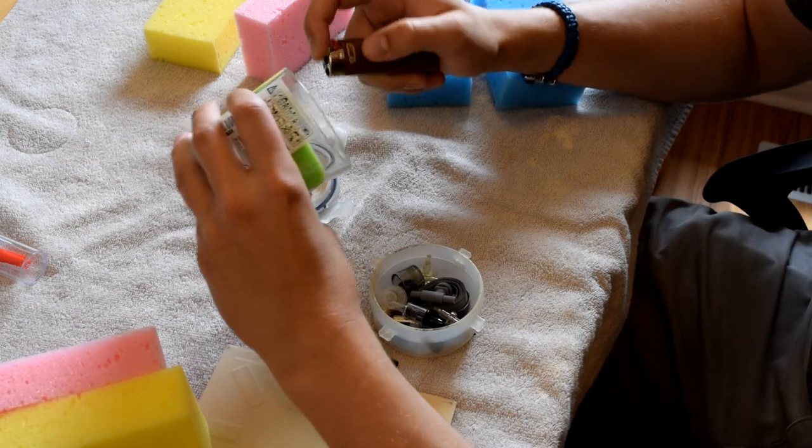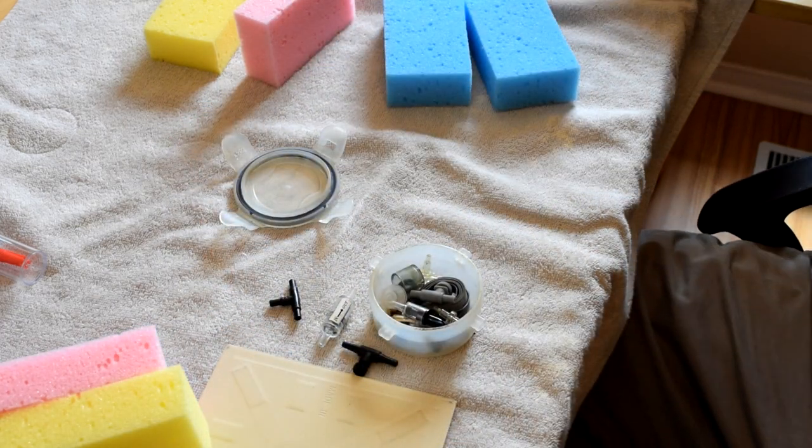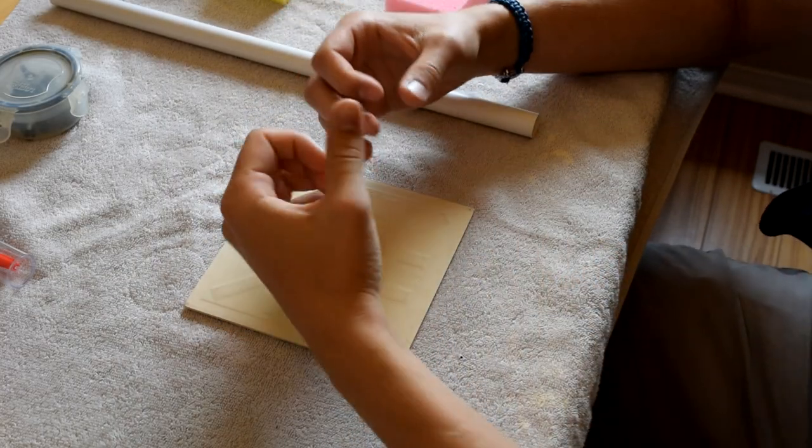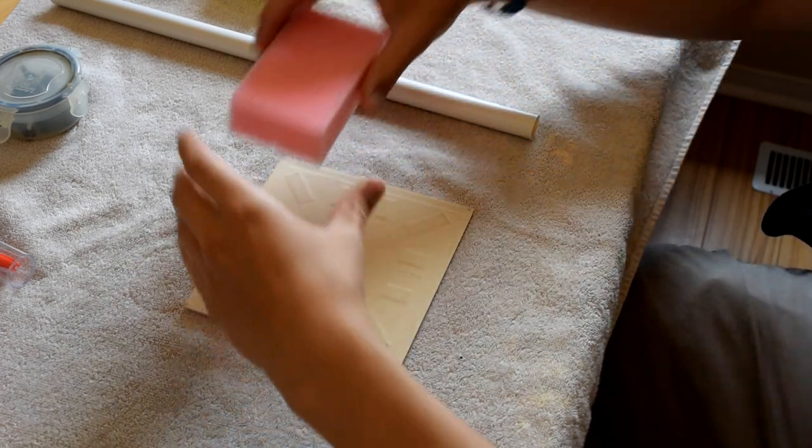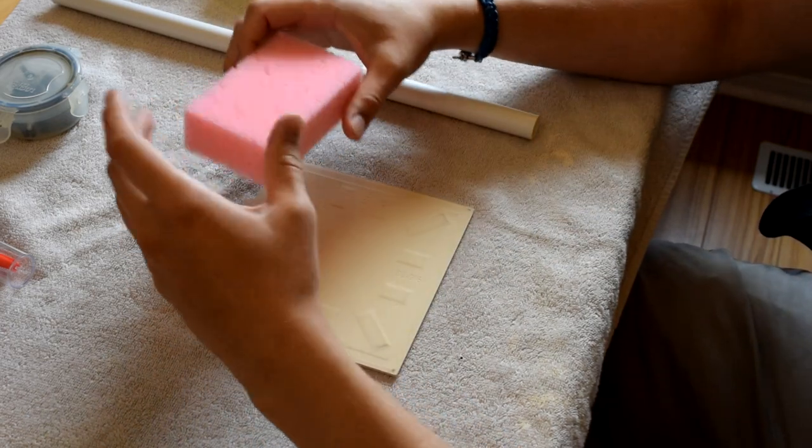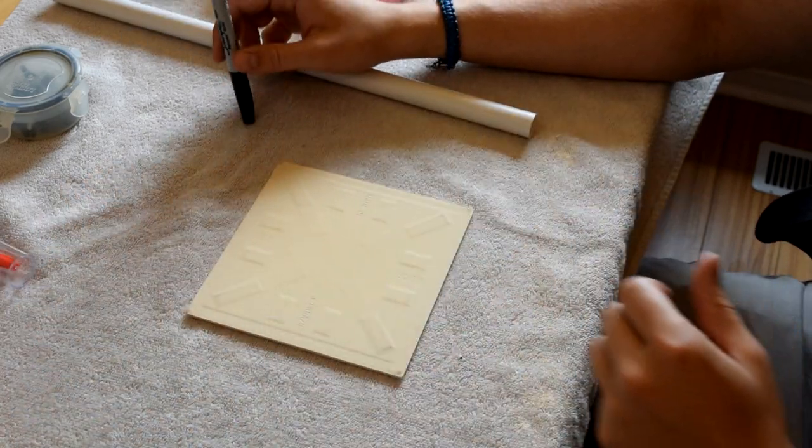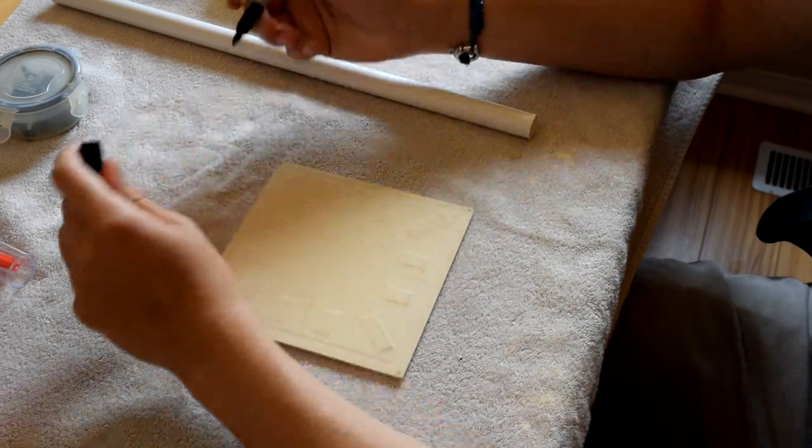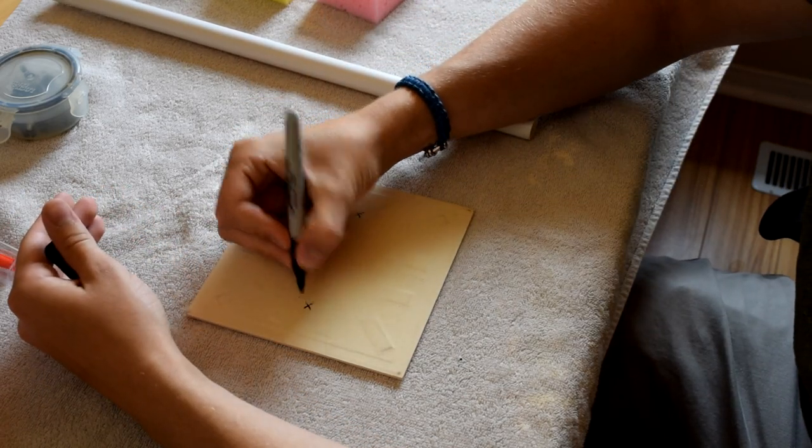All right, so step one is we're going to light our candle. We got a nice green apple going here so we're going to get some good vibes going for this project. Okay, for this specific sponge filter we're going to be doing two stand pipes on one tile, and then we're going to be using the sponges cut in half and those are going to be for each one of the stand pipes. This will all start to make sense as we're going along. So I'm just going to mark roughly on the tile where I want the stand pipes.